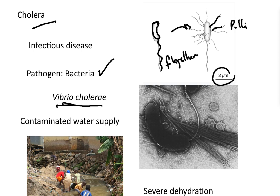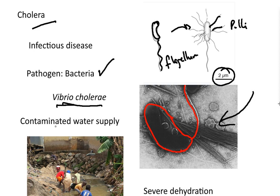And we've got a size reference here in this diagram. This here is an electron micrograph of the bacteria. There's the main comma-shaped cell structure, and there is the flagellum which gives it propulsion.